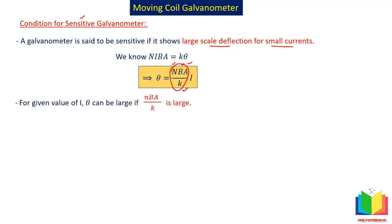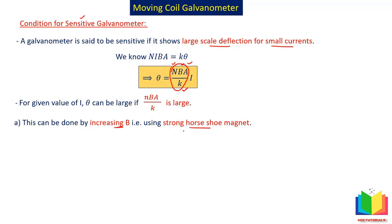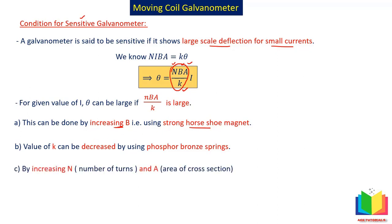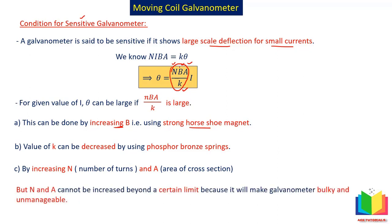This can be done by increasing B — using a strong horseshoe magnet; by decreasing K — using soft springs like phosphor bronze springs or quartz springs; and by increasing the number of turns N and area of cross section A. However, note that N and A cannot be increased beyond a certain limit, because if we increase the number of turns and area of cross section too much, our galvanometer will become very bulky and unmanageable.